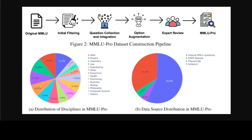Secondly, MMLU Pro increases the portion of challenging college-level exam problems. These questions require LLMs to perform deliberate reasoning in different domains to derive the final answer. Thirdly, they have integrated two rounds of expert reviews to reduce noise in the dataset. The first round is based on expert verification, and in the second round they utilized state-of-the-art LLMs to identify potential errors and employed annotators for more targeted verification. Overall, MMLU Pro necessitates chain of thought to achieve promising results.